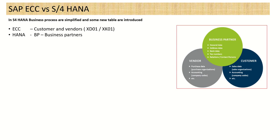The next difference is at the simplified business process. In ECC, there are separate transaction codes for customers and vendors — for example, XD01 for customer and SK01 for vendor. In S4 HANA, there is a single code called BP, which stands for Business Partner. Whether it is a customer, vendor, organization, or employee, you create a business partner and assign a customer role, vendor role, or any other role based on the requirement.